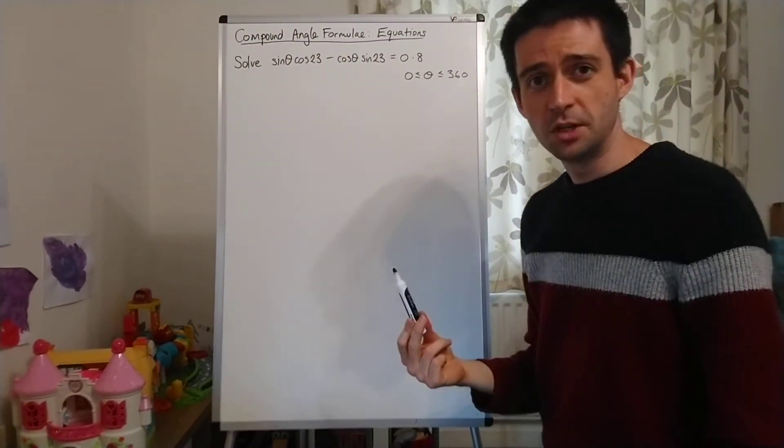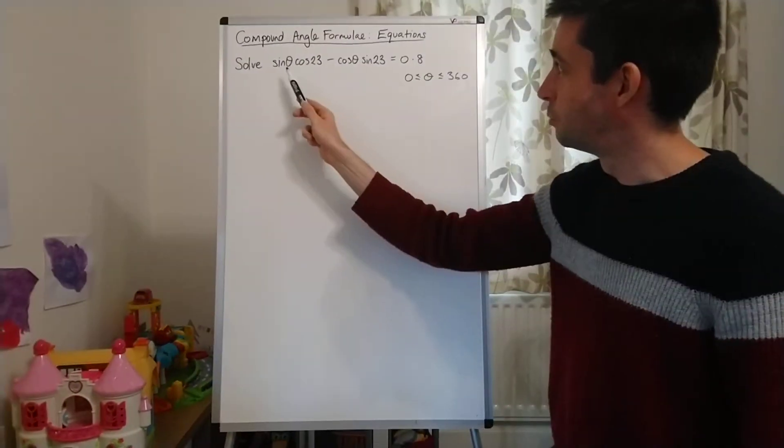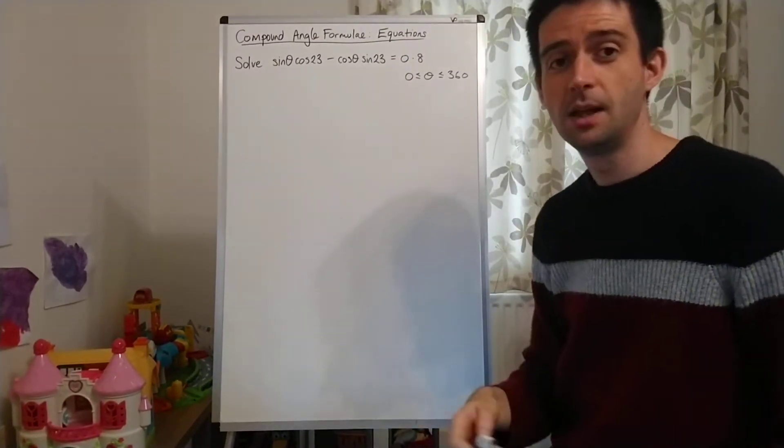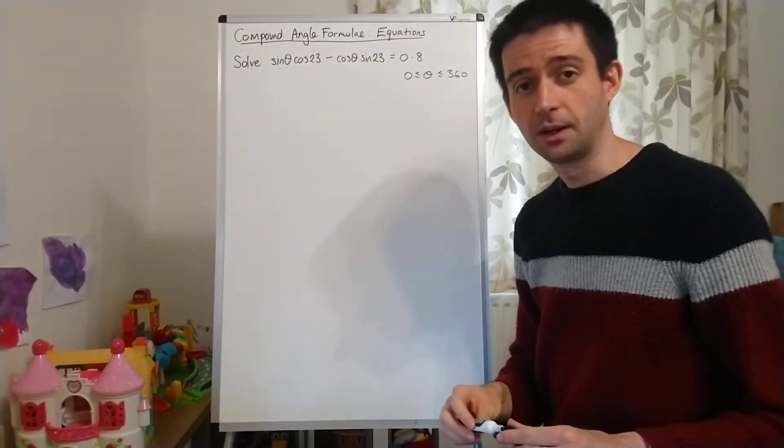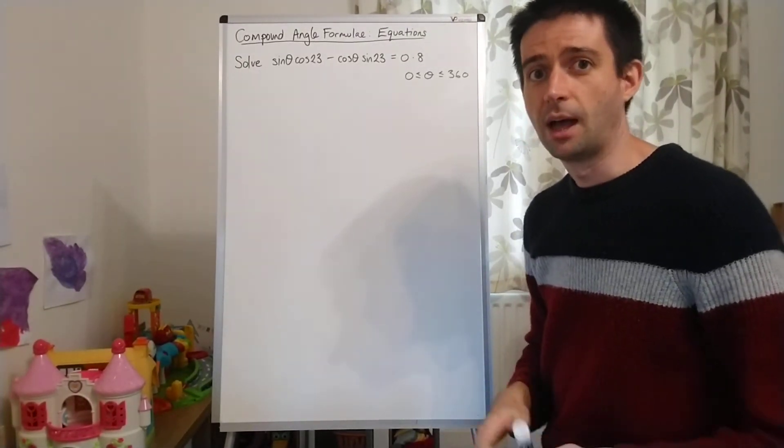So what I have to do is I have to realise, by looking at this form that the equation is given in, that this is one of the compound angle identities.